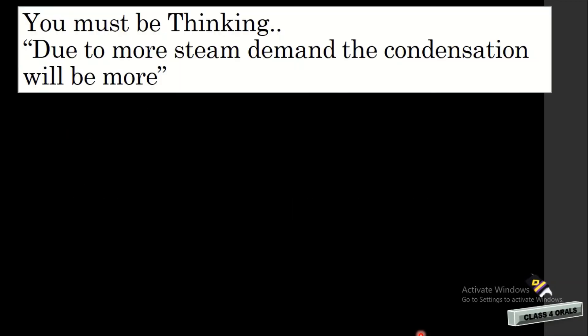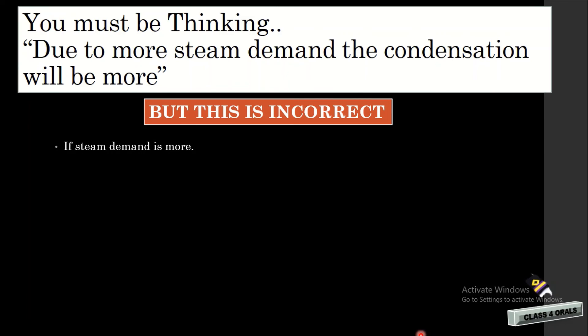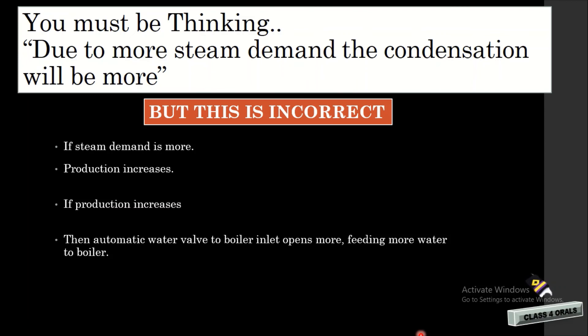One might think that the reason for cascade tank overflowing is more steam demand causing more condensation, resulting in overflow — but this is incorrect. If steam demand is more, that means production has increased. If production has increased, then the automatic water valve to the boiler inlet will open more and feed more water to the boiler, meaning the cascade tank will never overflow. So due to more steam demand, there will never be overflowing of the cascade tank.